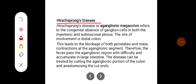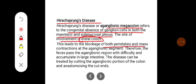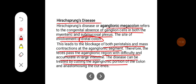Hirschsprung's disease, or aganglionic megacolon, refers to the congenital absence of ganglion cells in both the myenteric and submucosal plexuses. The site of involvement is the distal colon. This leads to blockage of both peristalsis and mass contraction at the aganglionic segment. Therefore, feces pass the aganglionic region with difficulty and accumulate in the large intestine. The disease can be treated by cutting the aganglionic portion of the colon and anastomosing.